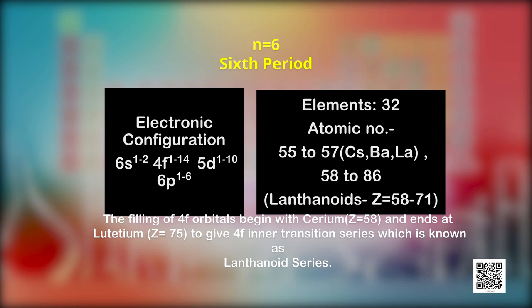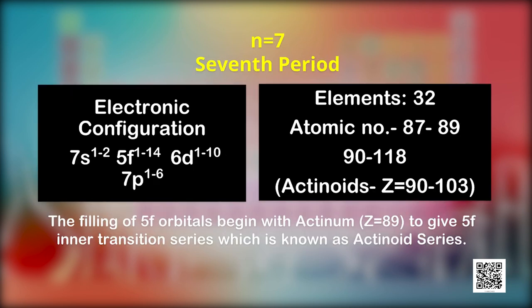For the sixth period, 16 orbitals are available — one 6s, seven 4f, five 5d, and three 6p — for filling with electrons, so this period contains 32 elements. The seventh period, like the sixth, also contains 32 elements corresponding to the filling of 16 orbitals — one 7s, seven 5f, five 6d, and three 7p orbitals.